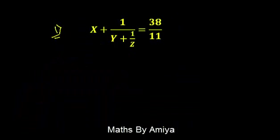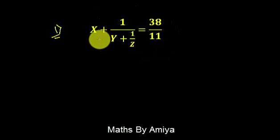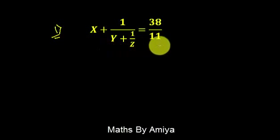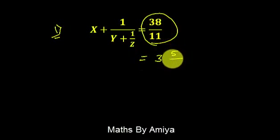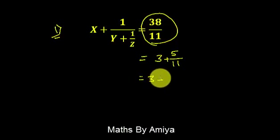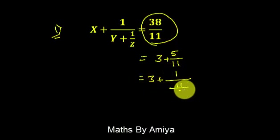Our first learning concept is how do we solve these type of equations if we have the condition that x, y, z are natural numbers. Whenever we have this type of question — it is a question of mixed fraction — first convert the fraction into a mixed fraction. For example, this is nothing but 3 and 5 by 11, and 3 and 5 by 11 is nothing but 3 plus 5 by 11. Now convert 5 by 11 in the reverse way, that is nothing but 11 by 5.